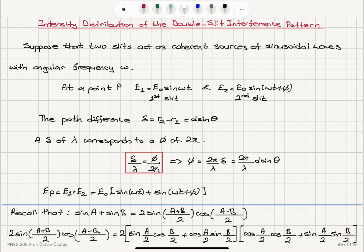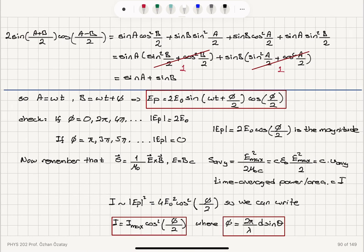To summarize, we discussed the intensity distribution of the double slit and N-slit interference pattern. To find this distribution, we need the total electric field at point P. Given a phase difference φ between the two slits, related to path difference by δ/λ = φ/(2π), and using the identity sin A + sin B = 2 sin((A+B)/2) cos((A−B)/2), the electric field at P has magnitude 2E0 cos(φ/2) multiplied by the oscillatory function sin(ωt + φ/2).